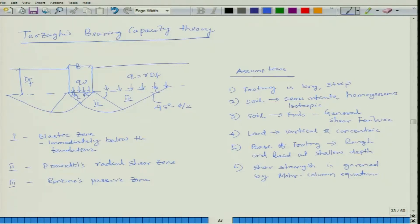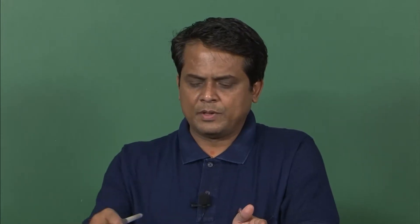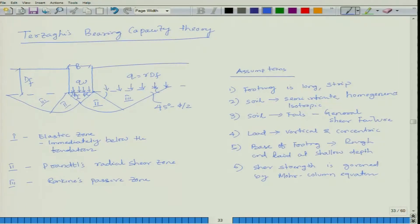How did Terzaghi's bearing capacity theory come about? It came from observations using electronic microscopy with polythene sheets, where this kind of failure surface was observed. Terzaghi was the first person who took these observations for a shallow foundation and classified it into zone 1, zone 2, and zone 3 — symmetric on both sides — implementing those failure surfaces into soil mechanics.